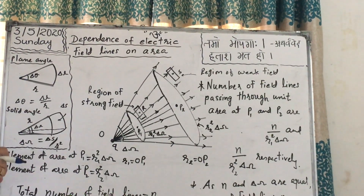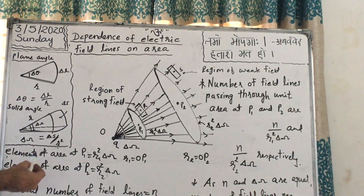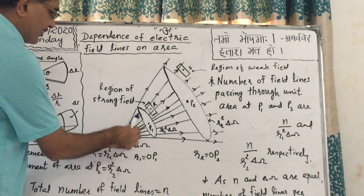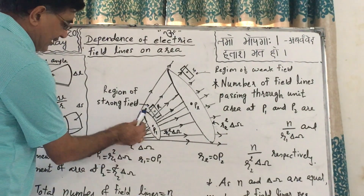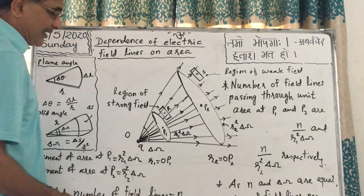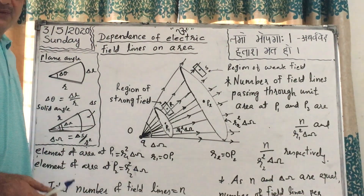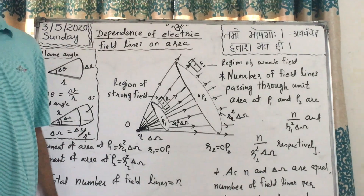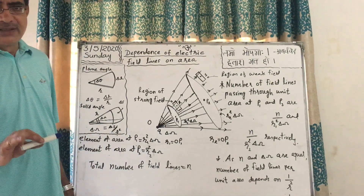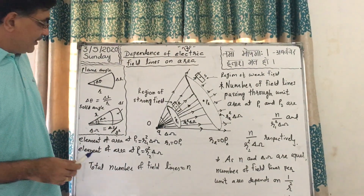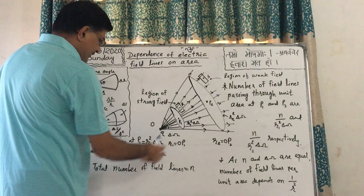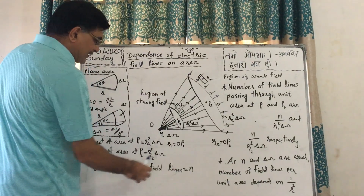The element of area at point P1 is R1² times delta omega, and element of area at point P2 is R2² times delta omega — analogous to how area of a circle is pi R squared.